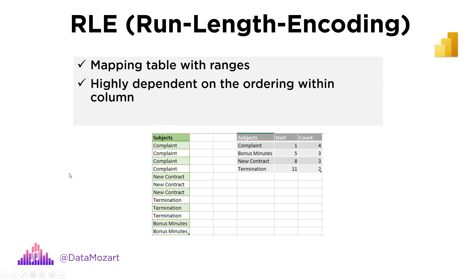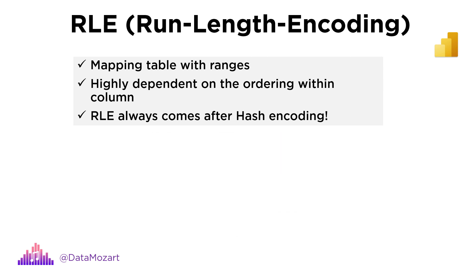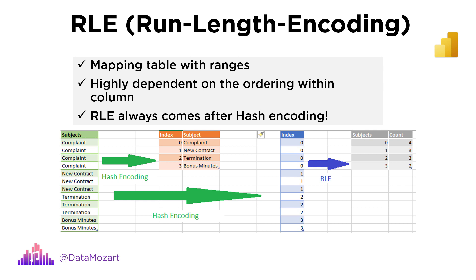One more thing to keep in mind: in reality, VertiPaq will first perform hash encoding and create a dictionary, and then apply the run length algorithm. Run length encoding occurs after hash encoding in those scenarios when VertiPaq thinks it makes sense to additionally compress the data — specifically when data is ordered in such a way that run length encoding would achieve better compression than using the hash algorithm solely.